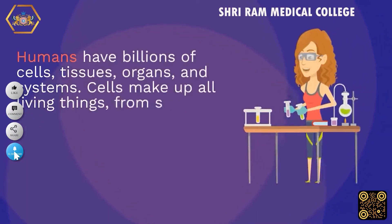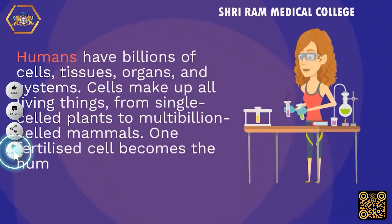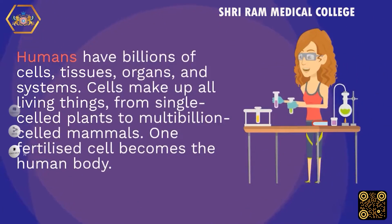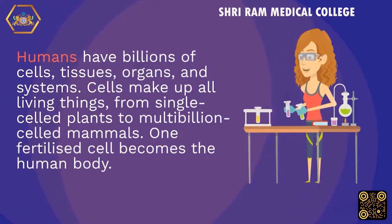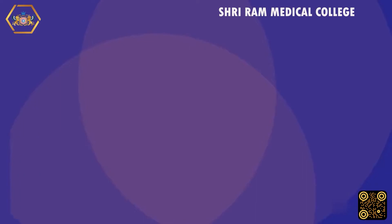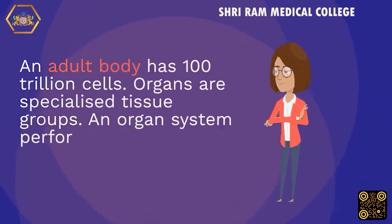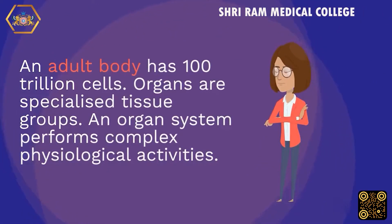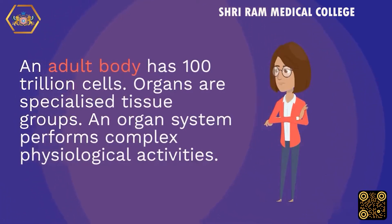Humans have billions of cells, tissues, organs, and systems. Cells make up all living things, from single-celled plants to multi-billion-celled mammals. One fertilized cell becomes the human body, and an adult body has 100 trillion cells. Organs are specialized cell groups, and an organ system performs complex physiological activities.